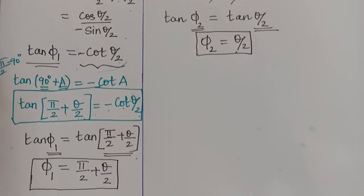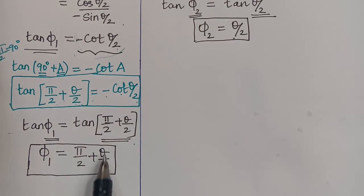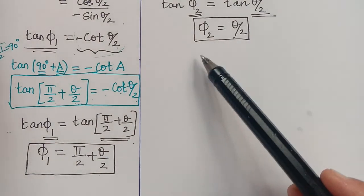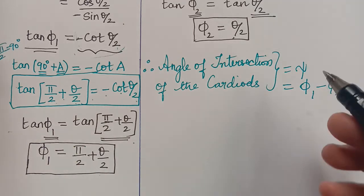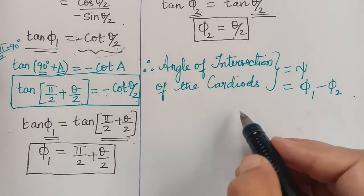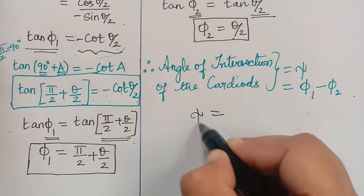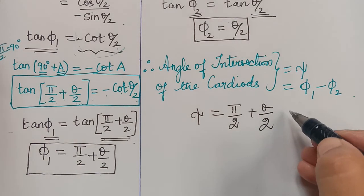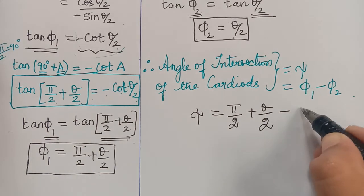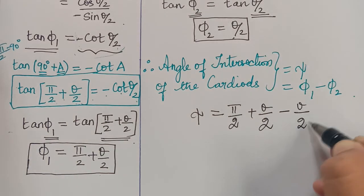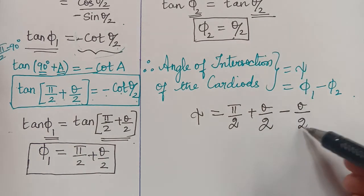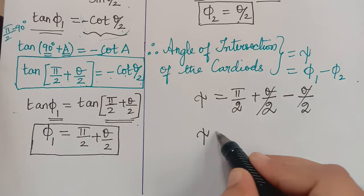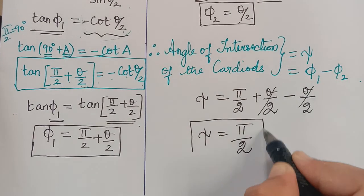We have obtained phi1 = π/2 + theta/2 and phi2 = theta/2. The angle of intersection of the cardioids is xi = phi1 − phi2 = (π/2 + theta/2) − (theta/2). The +theta/2 and −theta/2 cancel, so the angle of intersection of the cardioids is xi = π/2. This is the required answer.